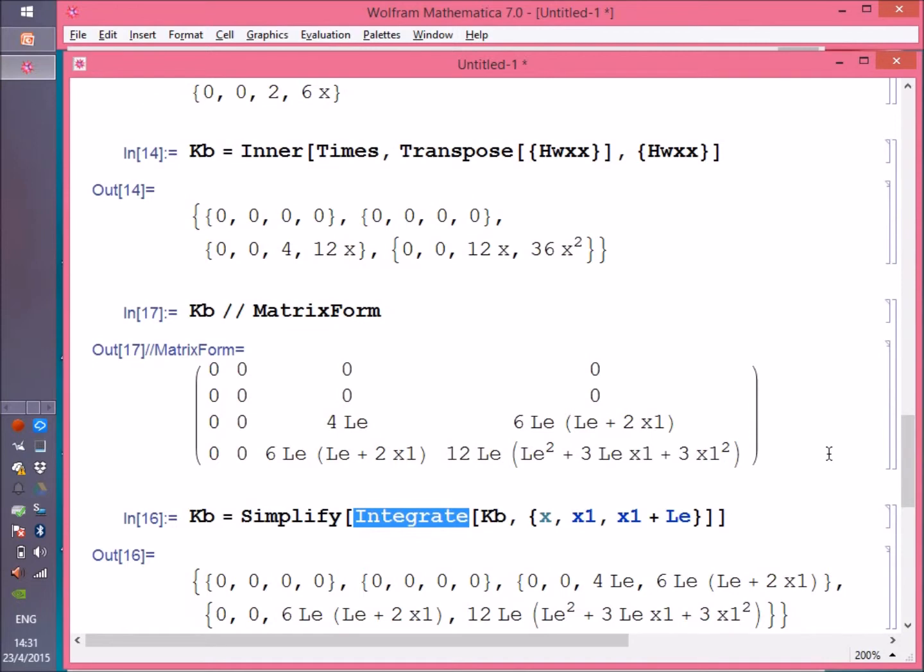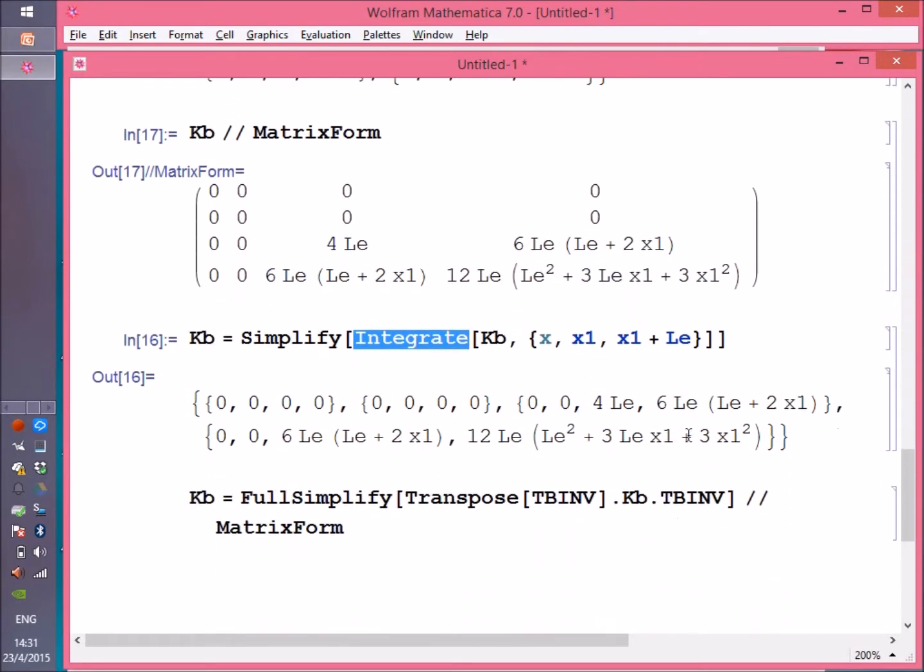Remember, TB inverse, although it contains a lot of information, is still a constant matrix. All I need to do is keep it outside the integration, perform the simpler integral, then multiply by the resultant.